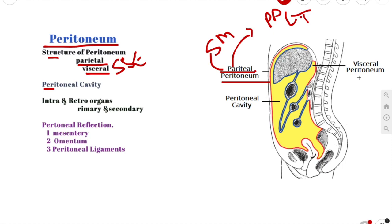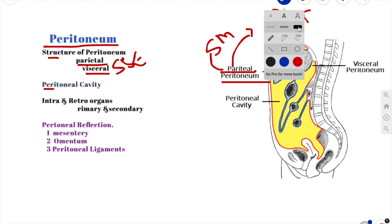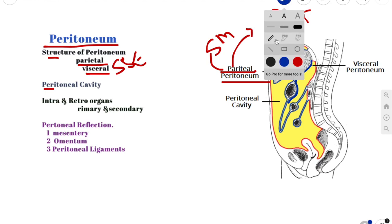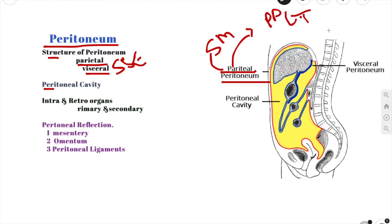Now let's talk about the visceral peritoneum. It differs a little bit because it covers the internal organs or the viscera. Looking at the diagram, the blue line you can see covering up these structures is your visceral peritoneum. This is your stomach, and this is what we call the transverse mesocolon. The visceral peritoneum covers up the internal organs.